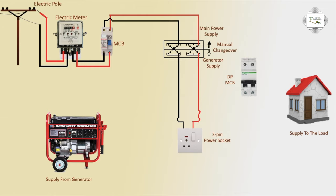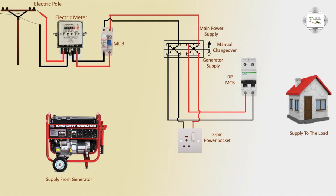Two inputs to changeover are now complete — PDB line and generator line input complete. Outgoing line: phase DP connection, neutral same connection. DP outlet to home connection. Changeover up means main power supply is active.